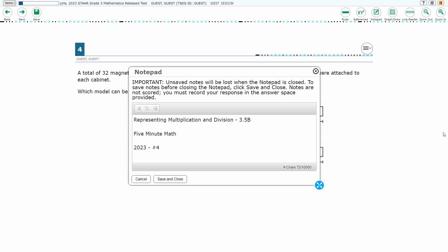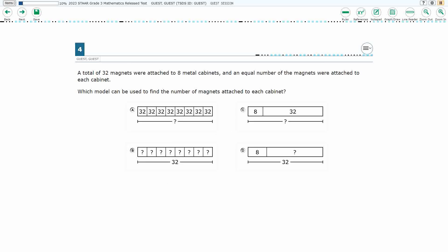Hello and welcome to 5-Minute Math. Today we are looking at the third grade concept of Representing Multiplication and Division. This is standard 3.5b in the great state of Texas and we are using item number 4 of the 2023 released STAAR test.